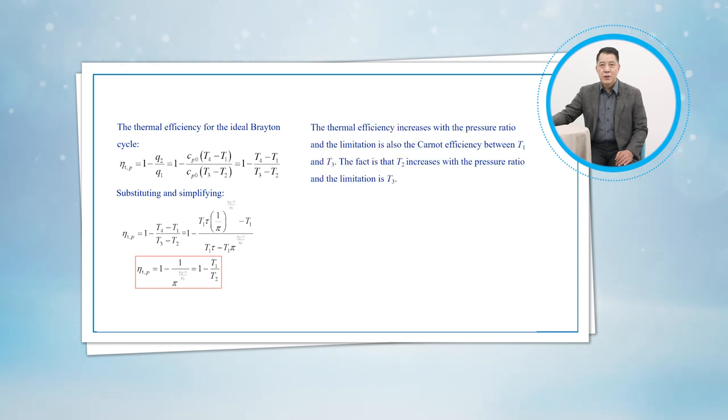The thermal efficiency increases with the pressure ratio, and the limitation is also the Carnot efficiency between T1 and T3. The fact is that T2 increases with the pressure ratio, and the limitation is T3.